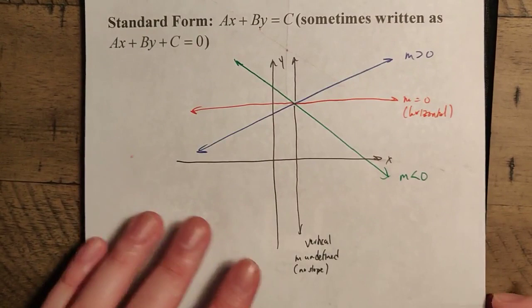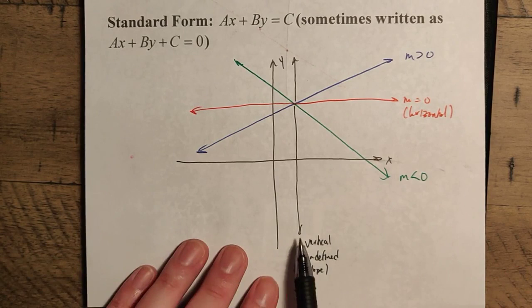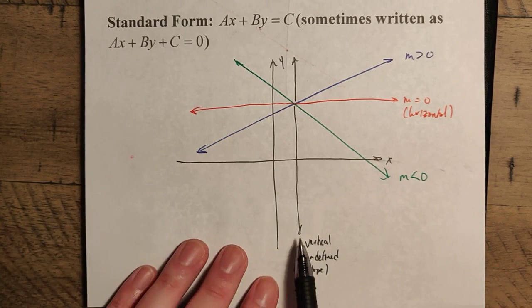An alternate way to think about this is you can also think of the slope being infinitely large, because you can think of the run being very, very tiny in comparison to the height. But in general, we generally say it's undefined or it has no slope. So you want to make sure you have these four kinds of lines here. You have positive slope, negative slope, your horizontal lines have zero slope, and your vertical lines have undefined slopes.